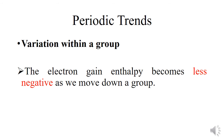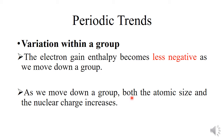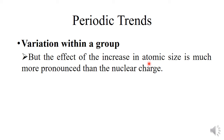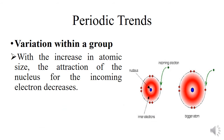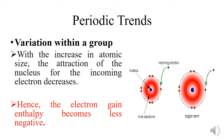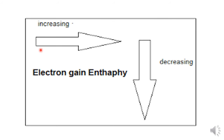Next is variation within a group. The electron gain enthalpy becomes less negative as we move down a group. This is because as we move down a group, both atomic size and nuclear charge increase, but the effect of the increase in atomic size is much more pronounced than the nuclear charge. The distance between the nucleus and the incoming electron increases, so the force of attraction decreases, hence the electron gain enthalpy becomes less negative.